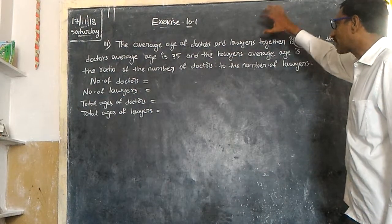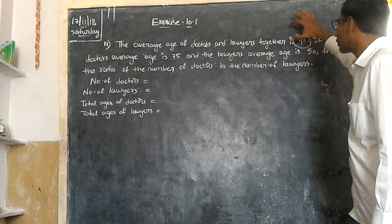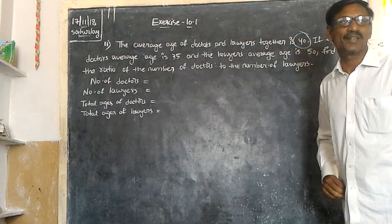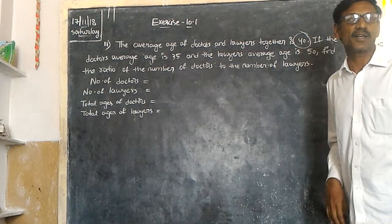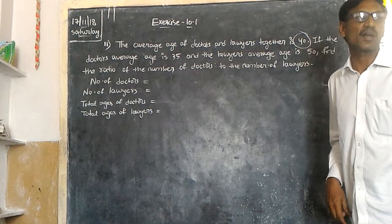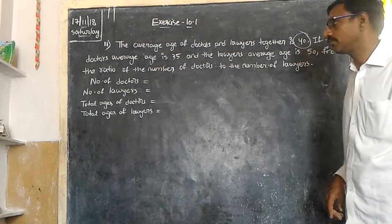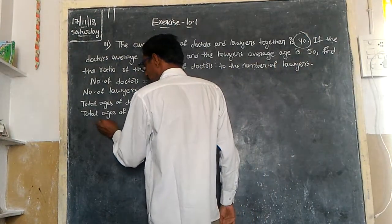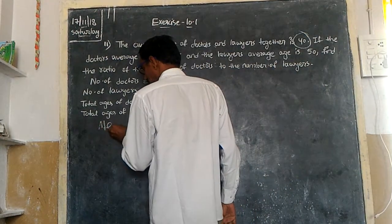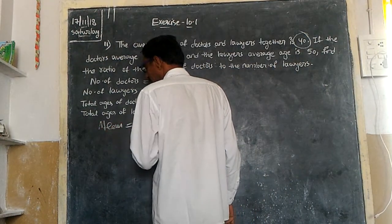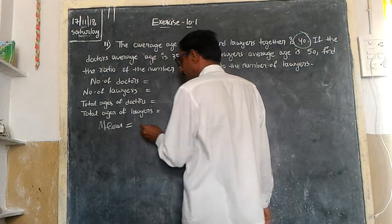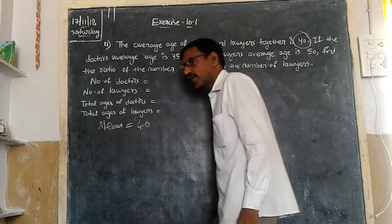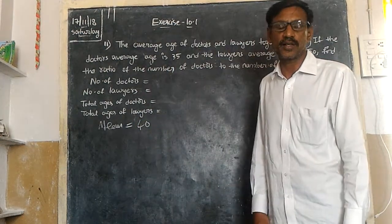The average age of doctors and lawyers together is 40. The average, or mean, is equal to 40.